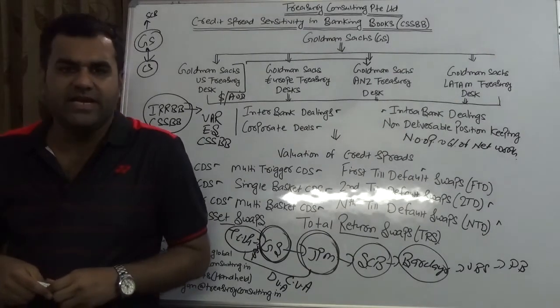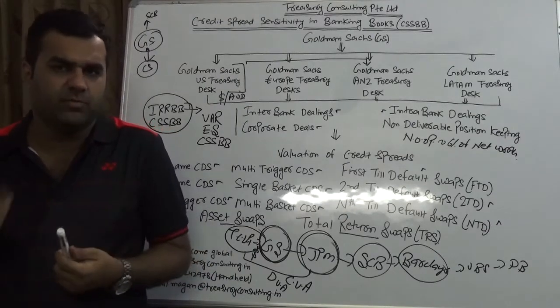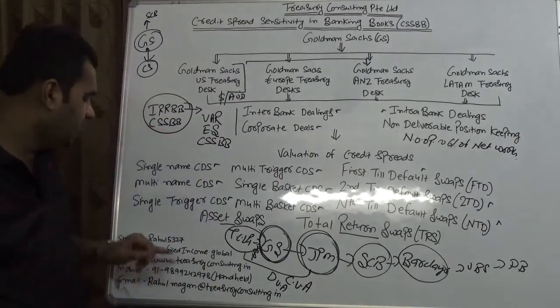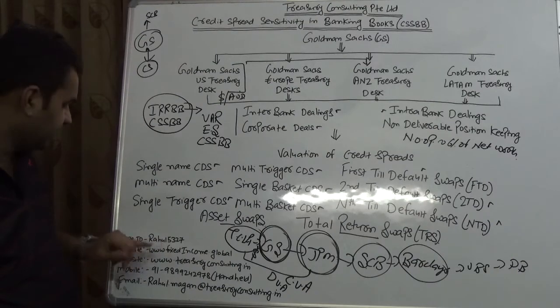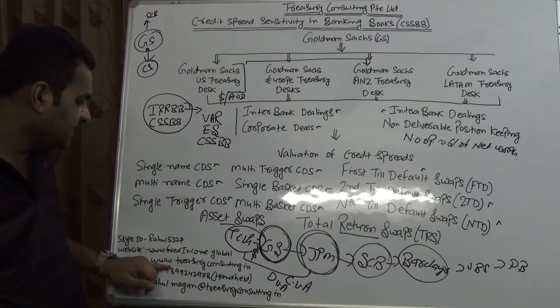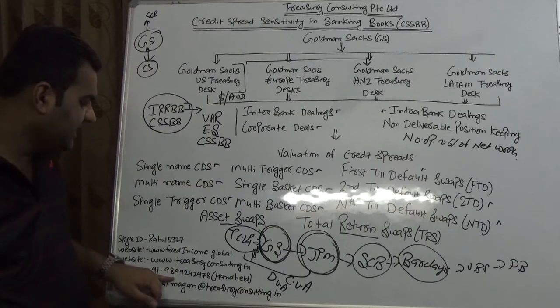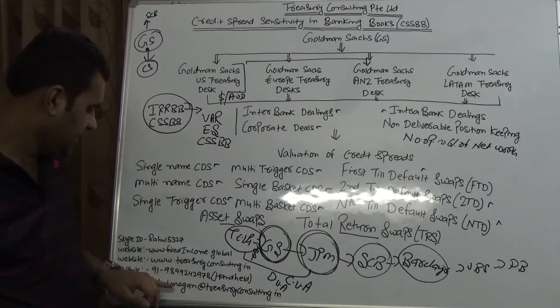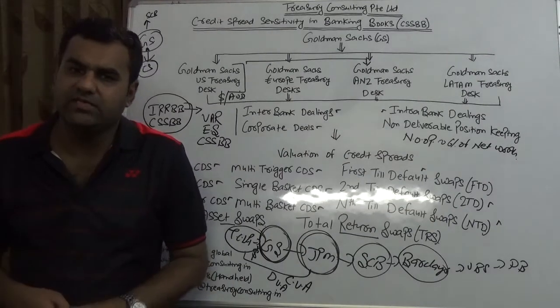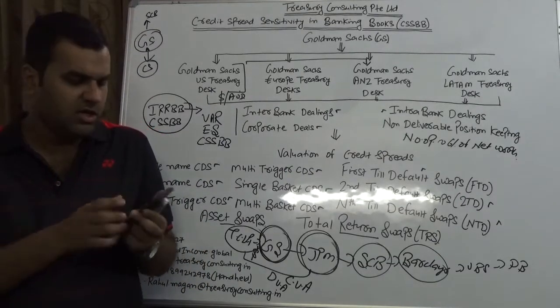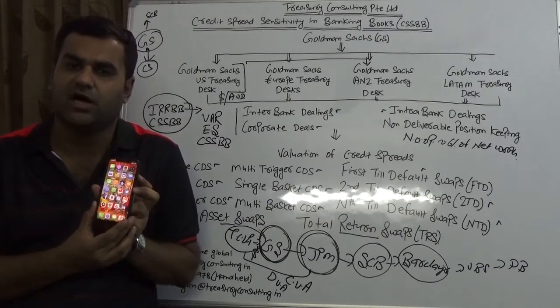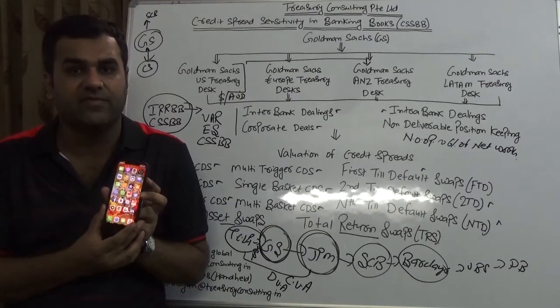Now we do offer trainings as well as implementation as well as consultancy for both IRRBB and CSSBB. You are most welcome to have that. Our contact Skype ID is Rahul5327. Our platform is www.fixedincome.global. Website is www.treasuryconsulting.in. Mobile is 9892942978 and email is rahul.magan at treasuryconsulting.in. In case you have any queries, please do come to us or alternatively you are most welcome to visit our fixed income platform at www.fixedincome.global. Thank you and have a wonderful time.